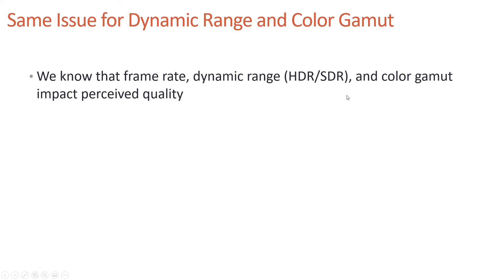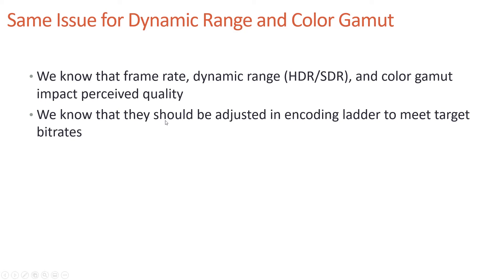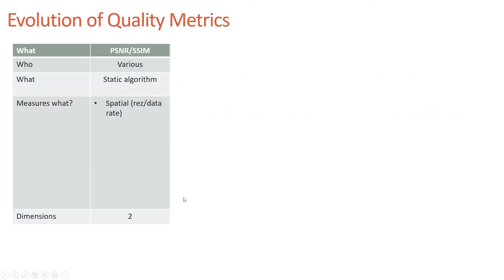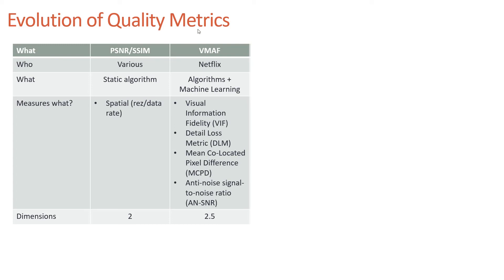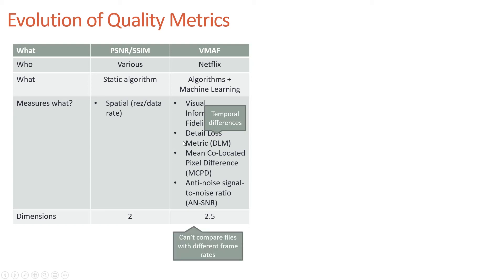We know that frame rate, dynamic range, HDR, SDR, and color gamut impact perceived quality and should be adjusted in the encoding ladder. But PSNR only measures frame quality — it can't help here. PSNR and SSIM were static algorithms for still images adapted to video, measuring two dimensions: data rate and resolution. VMAF from Netflix added four quality measures including temporal differences, moving from a static metric to 2.5 dimensions, but VMAF can't compare files with different frame rates.